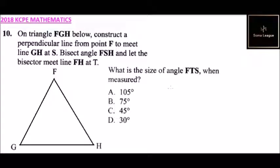Question number 10. On triangle FGH below, construct a perpendicular line from point F to meet line GH at S. Bisect the angle FSH and let the bisector meet line FH at T. What is the size of angle FTS?